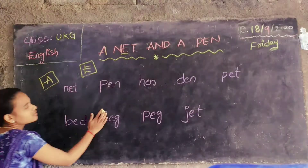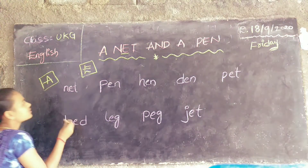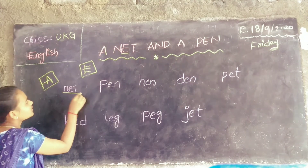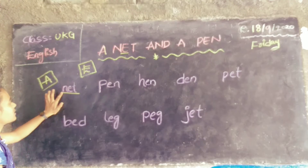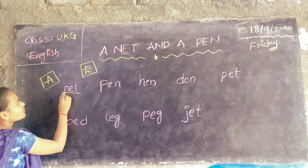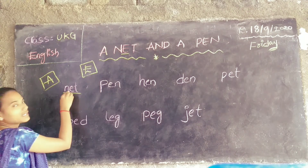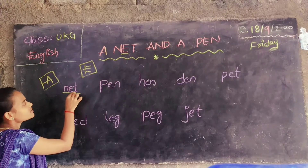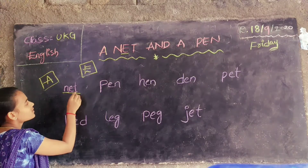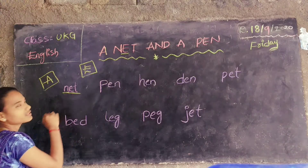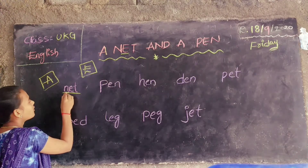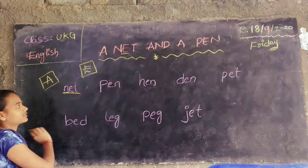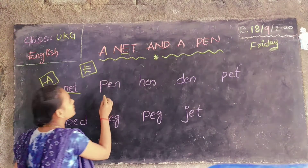Here, first word: net. How to pronounce it? The sound of N is N. Next, sound of E is A. Next, sound of T is T. How to pronounce it? N-E-T. Net.